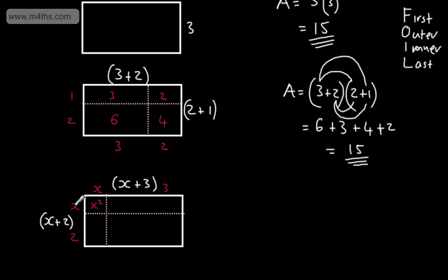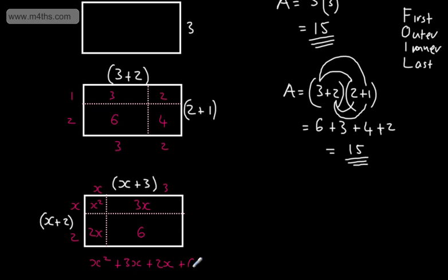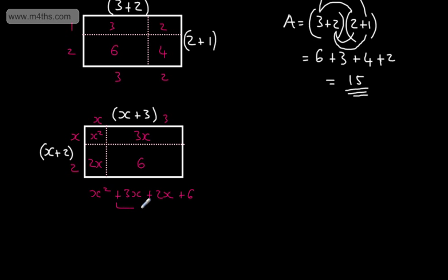A killer error is to say x times x is 2x — it's x squared. If x were 6, then 6 times 6 is 36, not 12. The other parts give x times 3 = 3x, 2 times x = 2x, and 2 times 3 = 6. Adding: x squared plus 3x plus 2x plus 6. Collecting like terms gives x squared plus 5x plus 6. Expanded and simplified.